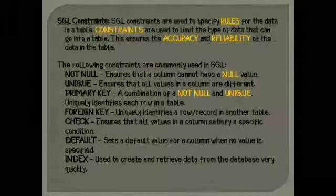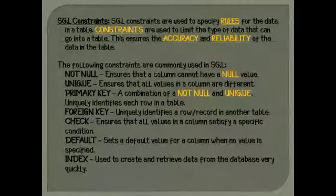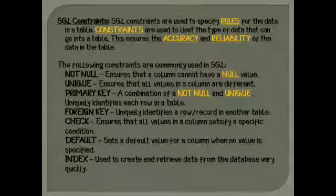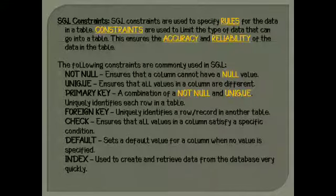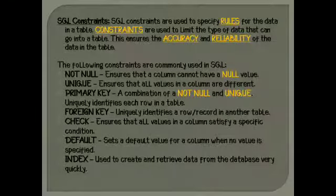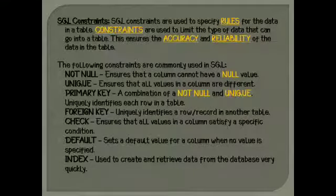There are following constraints which are commonly used in SQL. First one is NOT NULL, which ensures that a column cannot have a null value. Next is the UNIQUE constraint, which ensures that all values in a column are different. Next is PRIMARY KEY, which is a combination of NOT NULL and UNIQUE, and ensures that every row in a table is uniquely identified. Next is FOREIGN KEY, which uniquely identifies a row or record in another table.